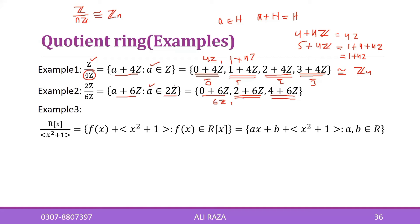Adding eight: six gets absorbed, two remains. Adding ten: six gets absorbed, four remains. So the elements of this ring are only three distinct cosets. Similarly, for polynomial rings we can define factor rings — the quotient of a polynomial ring by an ideal, where every polynomial generates cosets by adding elements of the ideal.